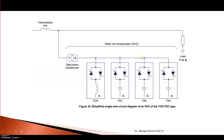Consider the same example with 3 capacitor banks — 3 TSC branches and only one TCR. When the system requires 40 KVAR to be absorbed, TCR can produce 40 KVAR, and all TSC branches can be switched off by thyristor control. That was not possible in the FC case — in FC there was no possibility of switching on and off, but here TSC can be made off, and TCR will produce 40 KVAR to absorb.